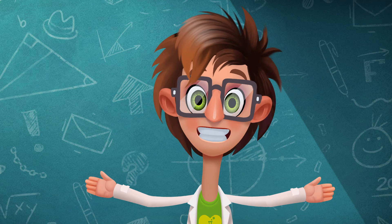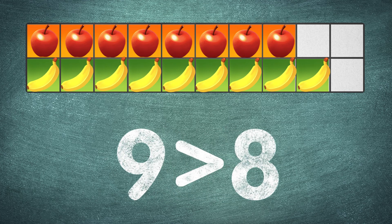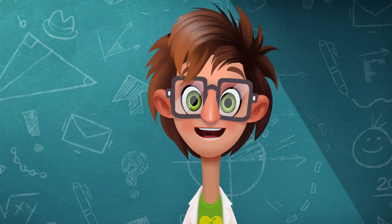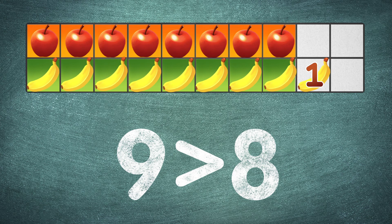How many fewer apples are there? That's right, one. There is one fewer apple. And at the same time, the number of bananas is more than the number of apples — we can show this with the greater than sign. The answer here is also one. There is one more banana.